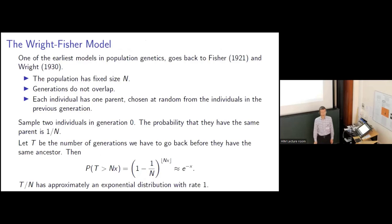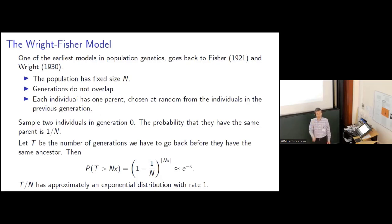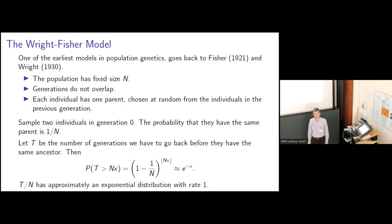Let's begin with the Wright-Fisher model, which was introduced by Fischer in 1921 and Wright in 1930. We assume that the population has fixed size N. This is a discrete time model and generations do not overlap. Each individual has one parent in the previous generation.